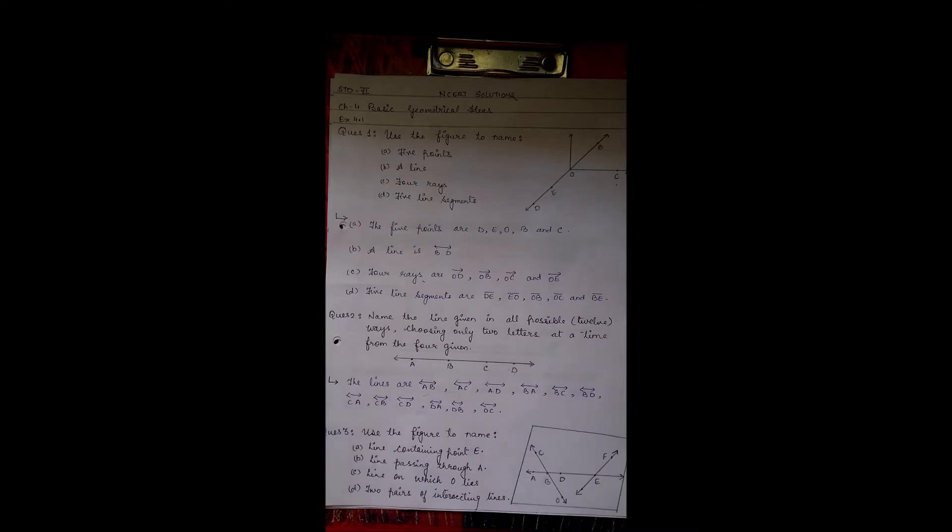Third question: use the figure to name line containing point E, line passing through A, line on which O lies, two pairs of intersecting lines.